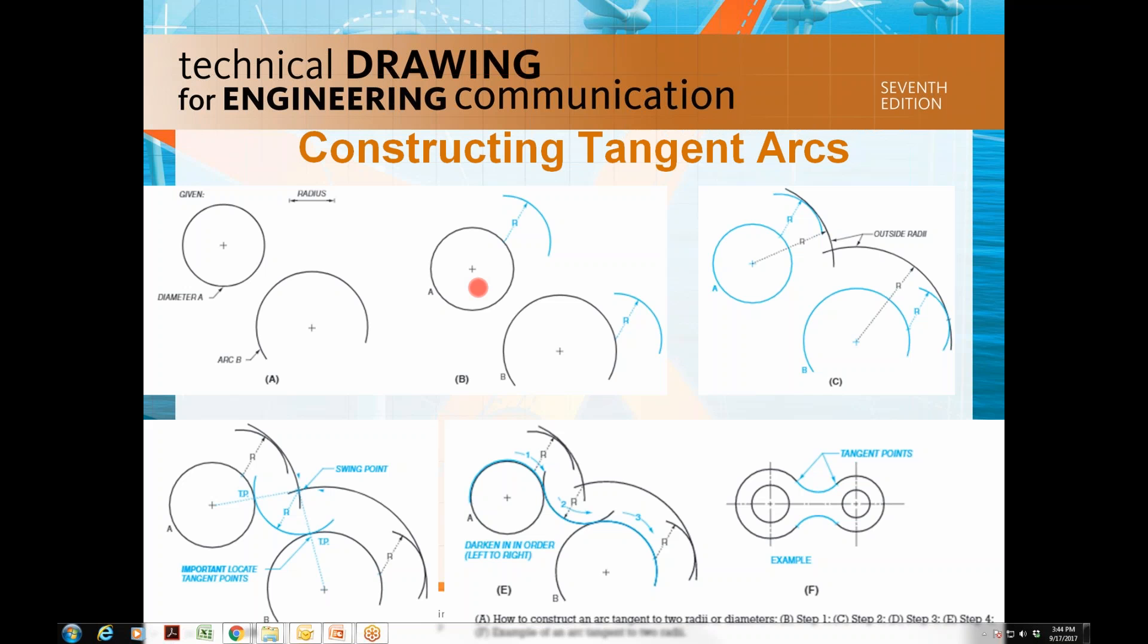Out of the way swing a required radius from a point on the circumference of the given arc B. From the extreme high point of each radius, construct a light radius outside of the given radii A and B as shown on step 2.